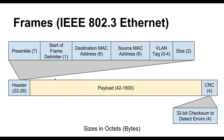The header is a minimum of 22 bytes, and the CRC is a 4-byte or 32-bit checksum.